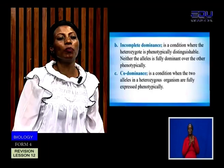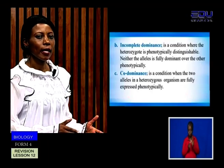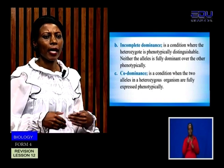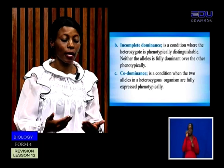Another example of co-dominance is in blood groups. For example, if the father is blood group A and the mother is blood group B — remember the blood group takes after the antigen — the chances of getting a child who is blood group AB is very high. That is a very good scenario of co-dominance.